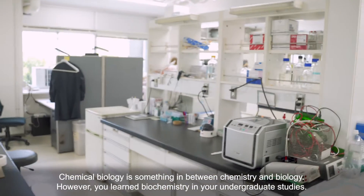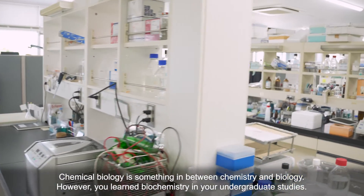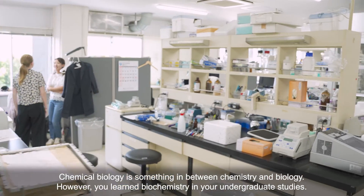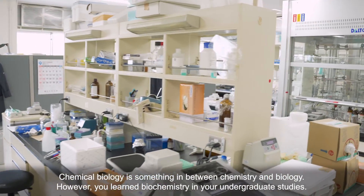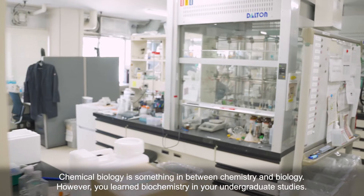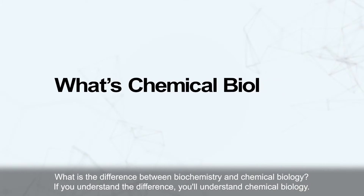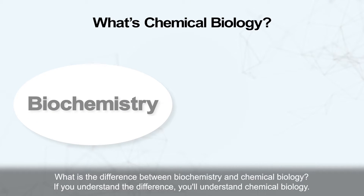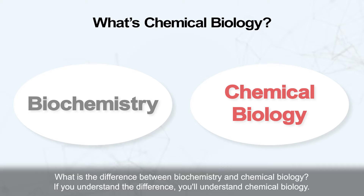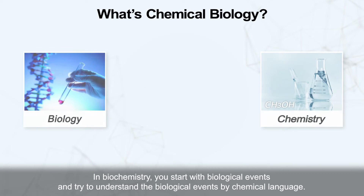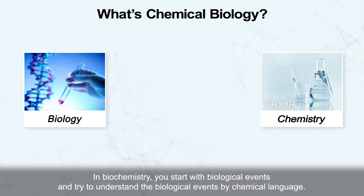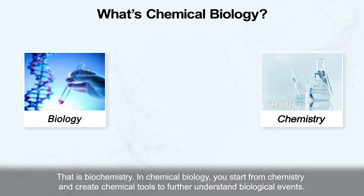Chemical biology is something in between chemistry and biology. However, you learned biochemistry in your undergraduate studies. What is the difference between biochemistry and chemical biology? If you understand the difference, you will understand chemical biology. In biochemistry, you start with biological events and try to understand biological events by chemical language. That is biochemistry.